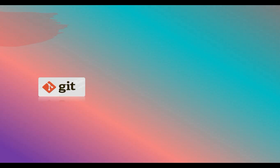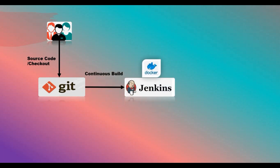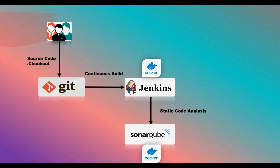To give some detail on how this works: you have a Git or some other source code version control tool where you keep your source code. We will do a build from Git — we are going to use a Java project, pull the code from Git, and do the build in Jenkins. In our case, Jenkins is running on Docker, and SonarQube is also running on Docker. Once the code is pulled by Jenkins, it will do the scan through SonarQube and give you the output in SonarQube.